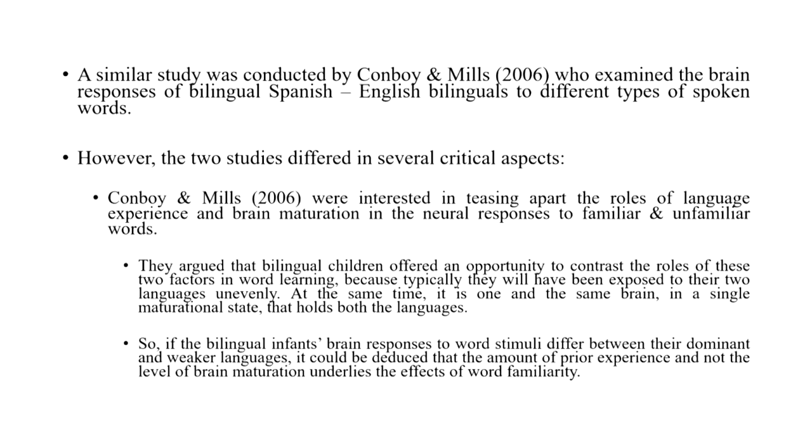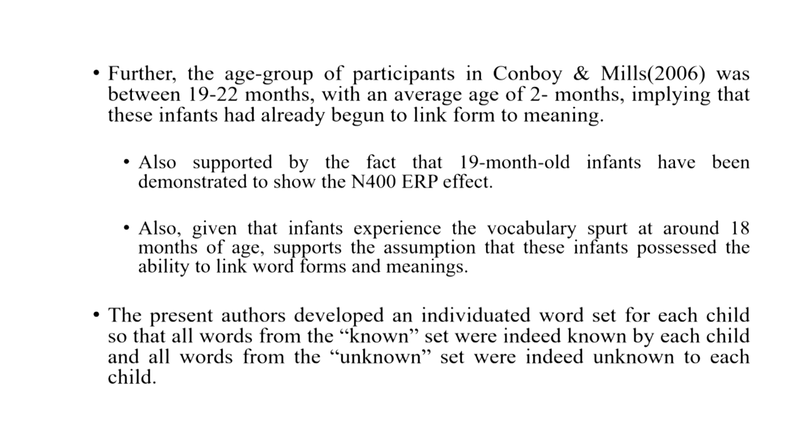The participants in Conboy and Mills' experiment were between 19 and 22 months of age — older than the 9 to 12 month olds in Wayman and colleagues' study. This implies that these infants had already begun to link words and meanings together. There are a couple of facts that support this: for example, 19-month-old infants have already been shown to demonstrate the N400 effect.